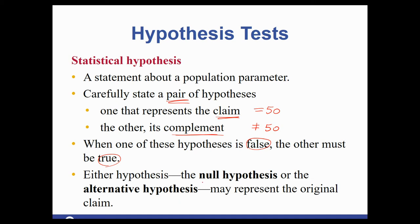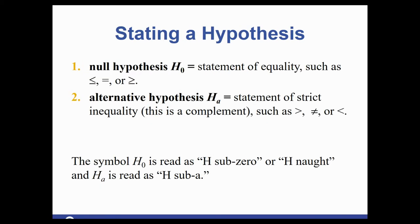We have names for them: the null hypothesis and the alternative hypothesis, and they have specific rules. The null hypothesis, written first as H₀, is always a statement of equality — so it's less than or equal, equal, or greater than or equal; it has to have some equal sign. The alternative hypothesis, Hₐ, is inequality. So the complement to less than or equal is greater than; the complement to equal is not equal; the complement to greater than or equal is less than.